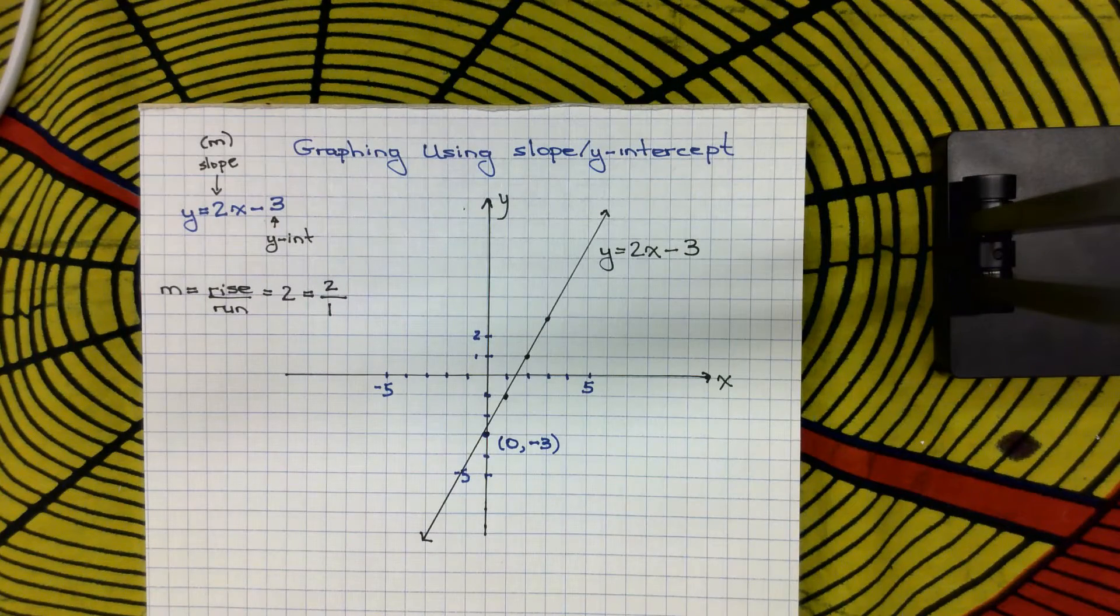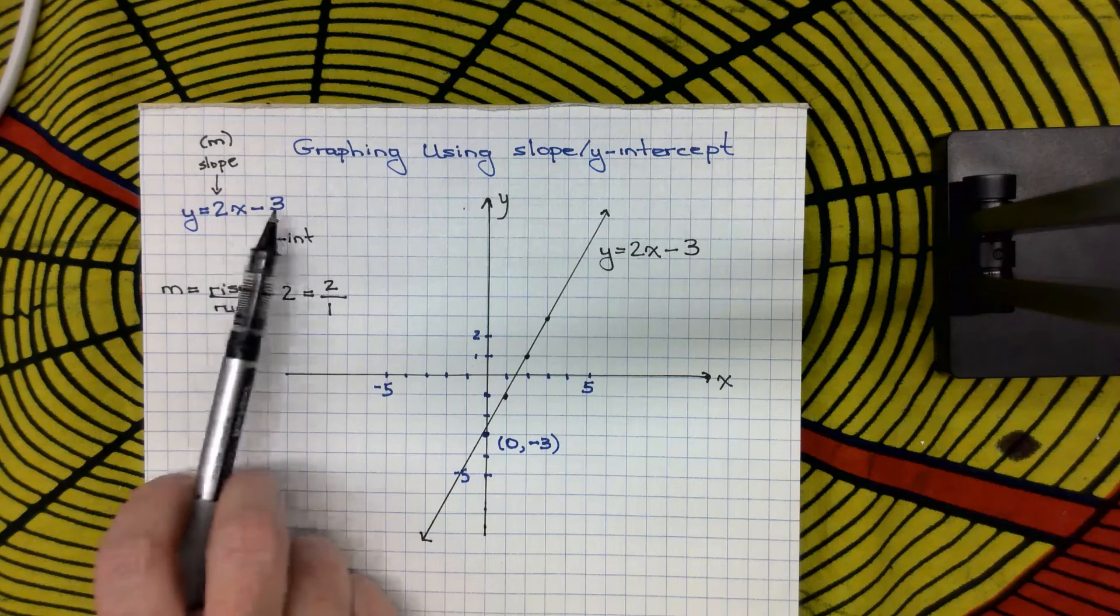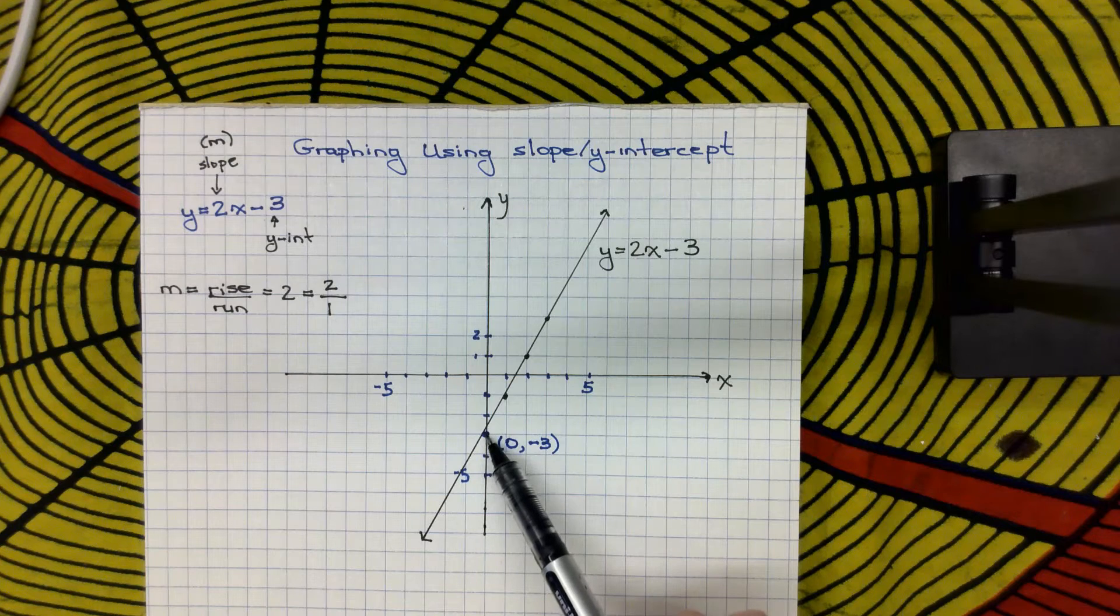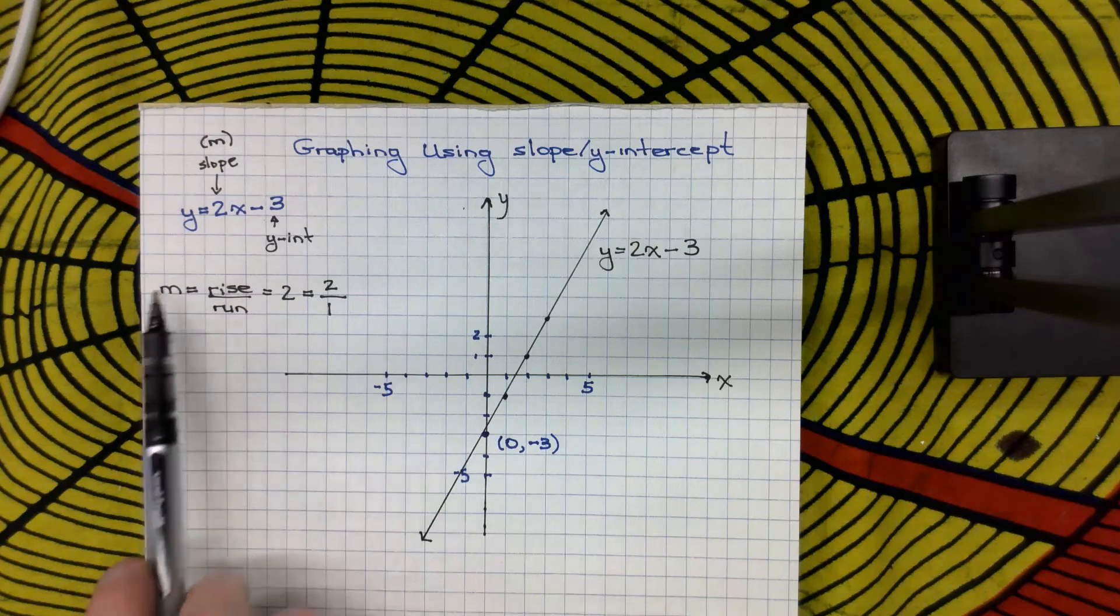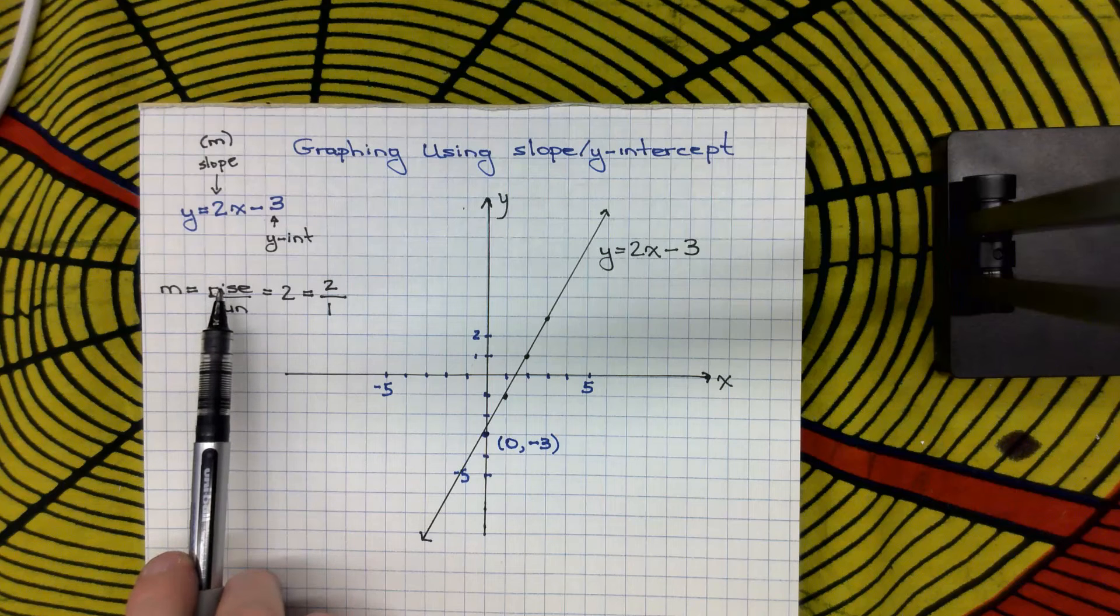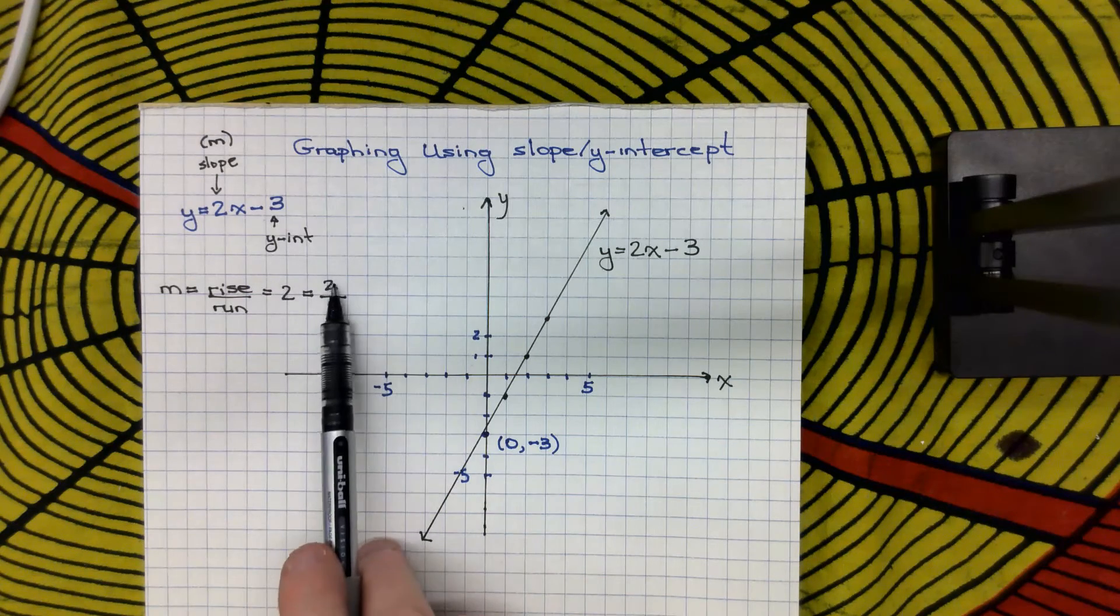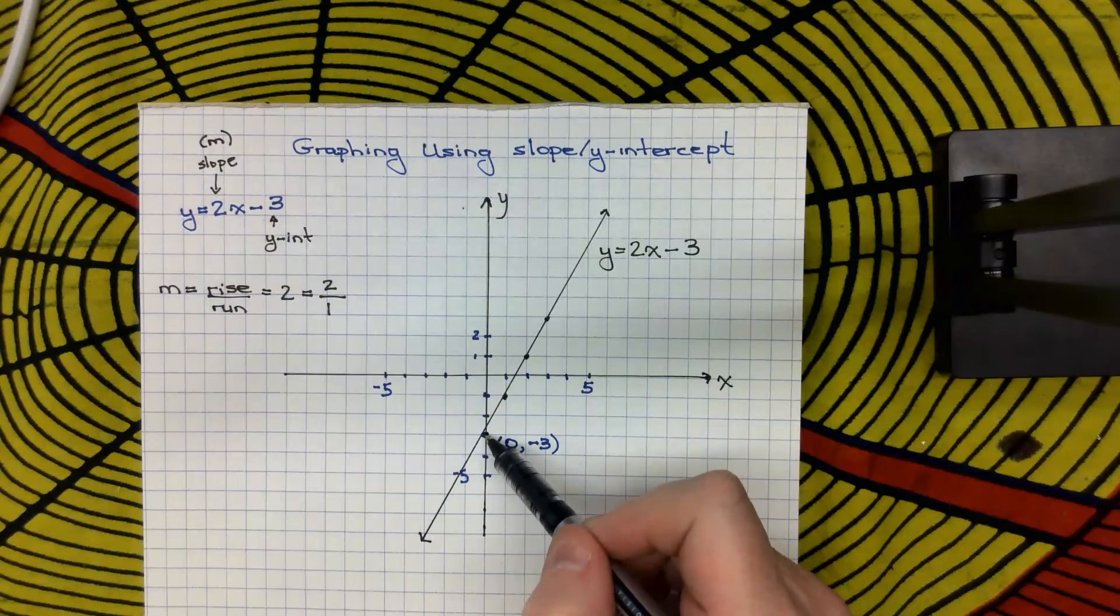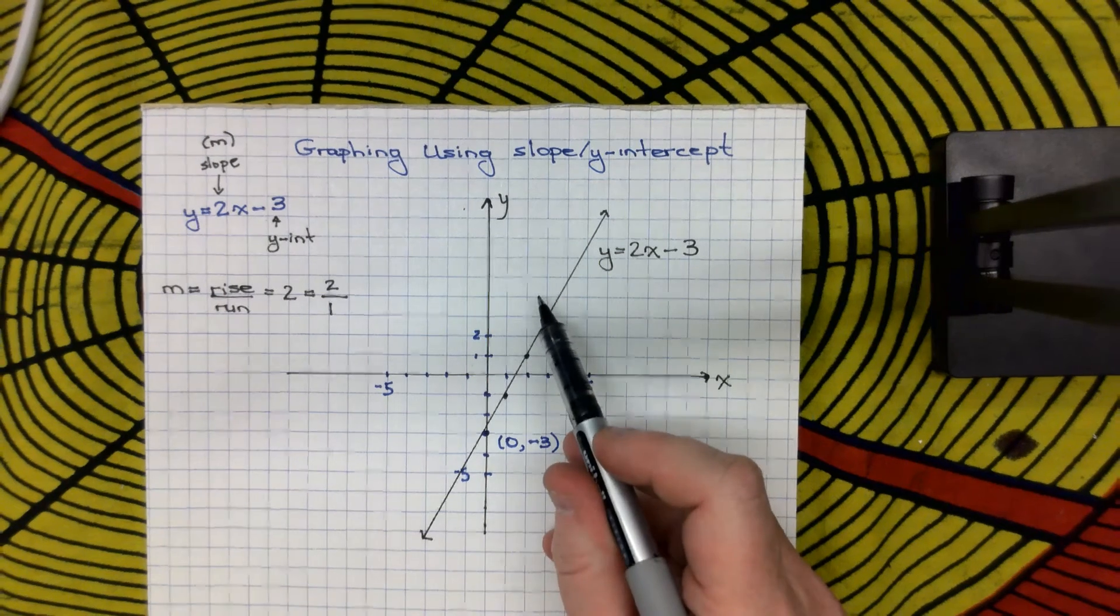So just to recap, any time you have an equation in the form y equals mx plus b, the number in front of the x is your slope, and the number by itself is your y-intercept. You always plot the y-intercept, so down here at negative 3. And then you use the slope to get to the next set of points. So slope is always how much is rising compared to how much is running, so how much is going up vertically compared to how much is going across horizontally. Because it's not a fraction, I make it a fraction by putting 2 over 1, because anything divided by 1 stays the same. And now I can start here, and I can rise 2 and run 1, and rise 2 and run 1, and rise 2 and run 1.